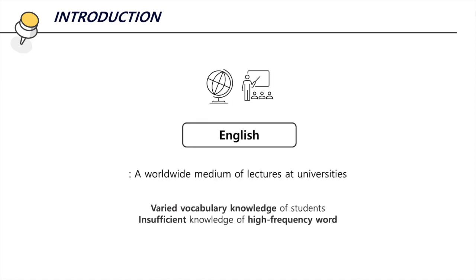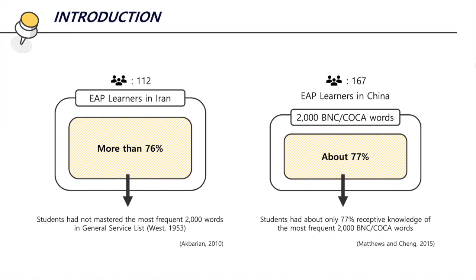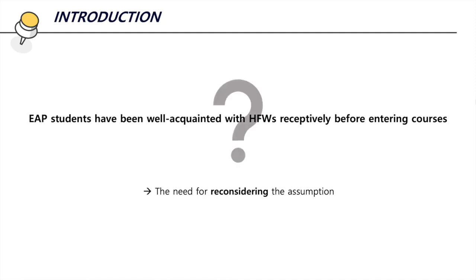English is a widely used medium of instruction at institutions around the world, but we need to consider students' varied vocabulary knowledge, as they may have insufficient knowledge of high frequency words. According to Akfarian, more than 76% of 112 EAP learners in Iran did not have knowledge of the most frequent 2,000 words in the General Service List by West. Also, Matthews and Chang's study showed that 167 EAP learners in China had only about 77% receptive knowledge of high frequency words. The article challenges EAP teachers' and course designers' assumption that learners have enough knowledge of high frequency words before entering programs, and suggests three research questions.